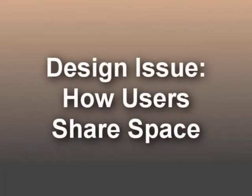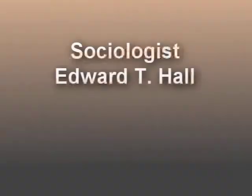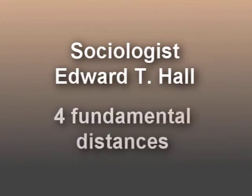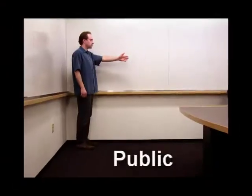A critical design issue for stitching is how users share physical space. Proxemics is an area of sociology that studies how people use space. Conceptually, an invisible bubble of space surrounds each individual. Sociologist Edward T. Hall identifies four fundamental distances in man. Within arm's length are the intimate and personal distances. Beyond arm's length are the social and public distances.